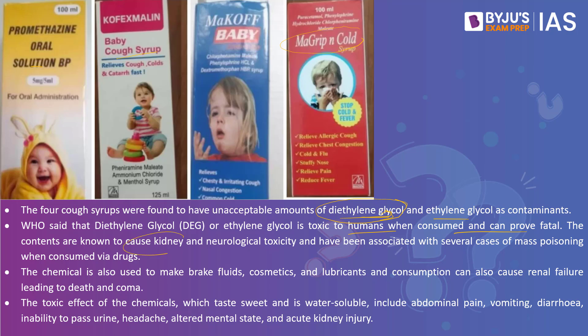The contents are known to cause kidney and neurological toxicity and have been associated with several cases of mass poisoning when consumed via drugs. Diethylene glycol is also used to make brake fluids, cosmetics, and lubricants. Consumption can cause renal failure leading to death and coma. The toxic effects — noting that the chemical tastes sweet and is water-soluble — include abdominal pain, vomiting, diarrhea, inability to pass urine, headache, altered mental state, and acute kidney injury.